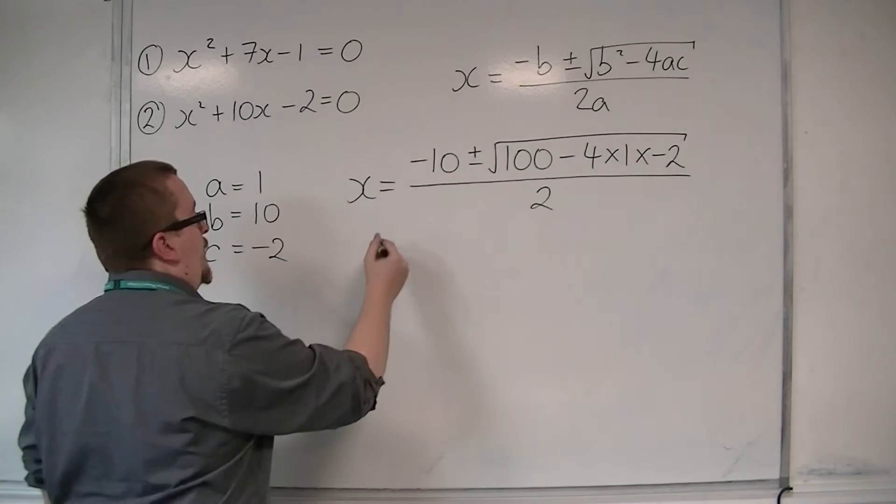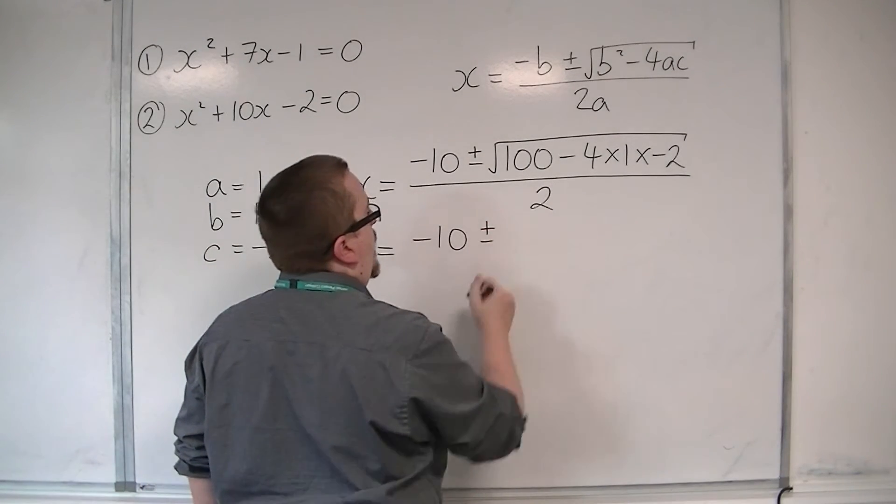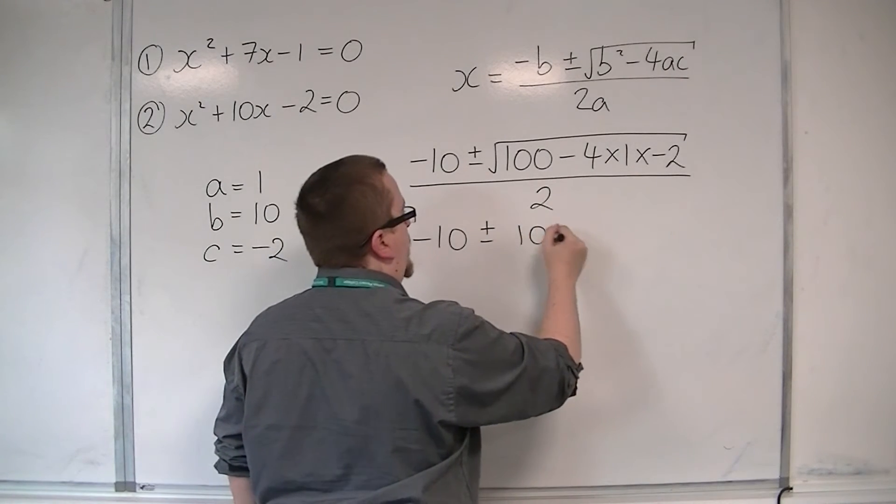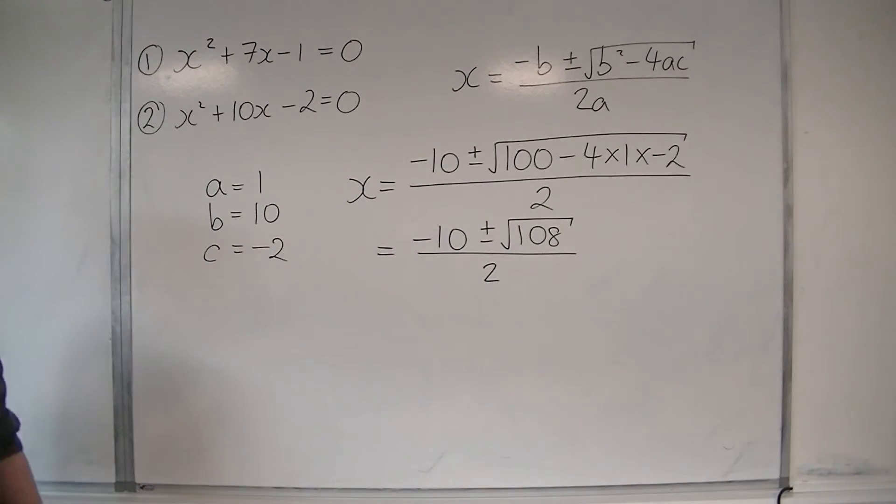So let's simplify this as far as we can. We've got that minus 10, plus or minus, now we've got 100 plus 8. So 108 square rooted all over 2.